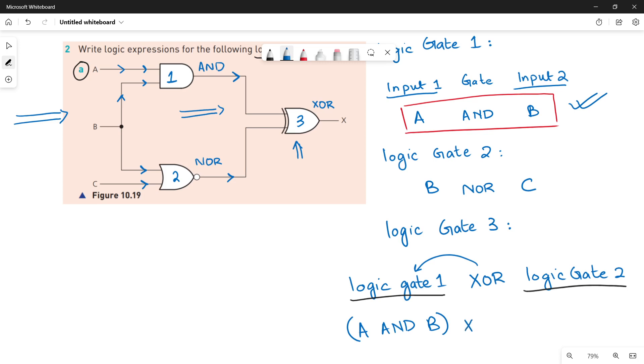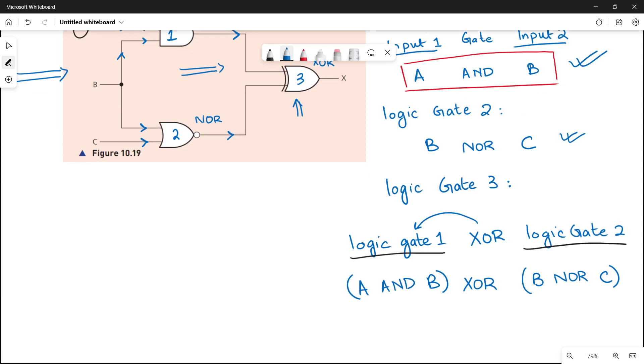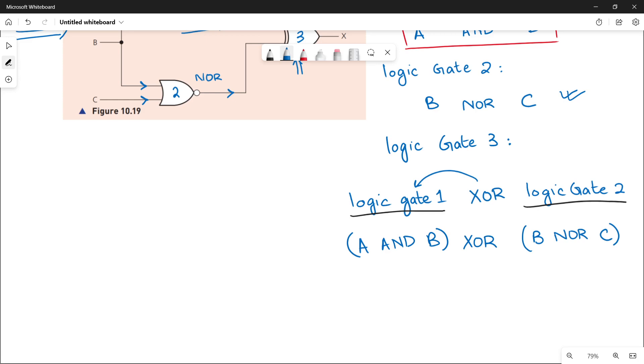Then it will be a XOR gate, and logic gate 2 is B NOR C. So B NOR C is written like this in the bracket. Since it is not a single input like B or like C, it is basically B NOR C, an operation done between B and C. It is your input value, so it must be written in the bracket.